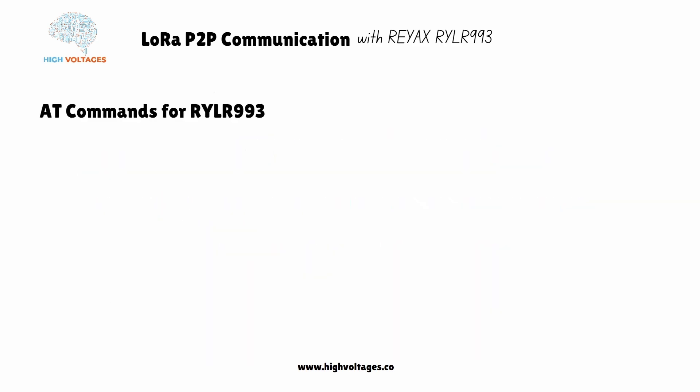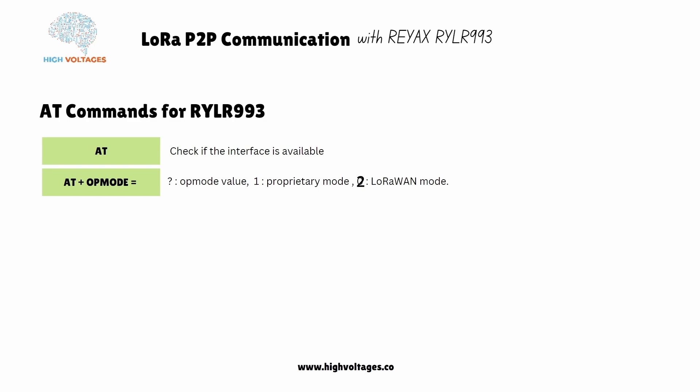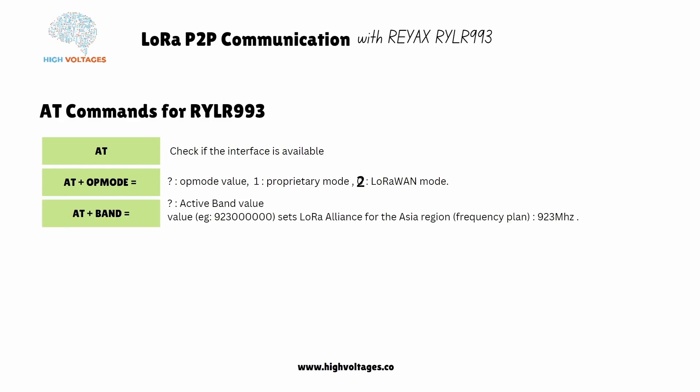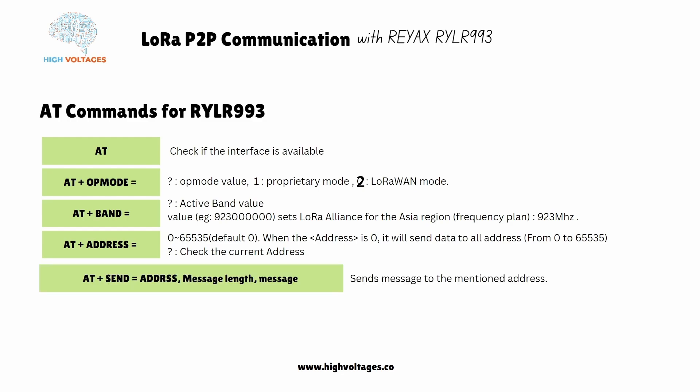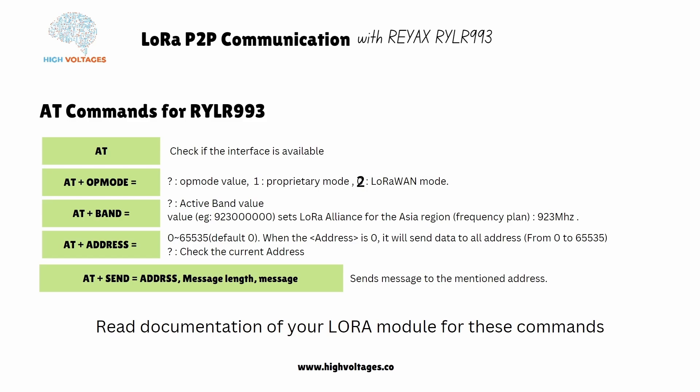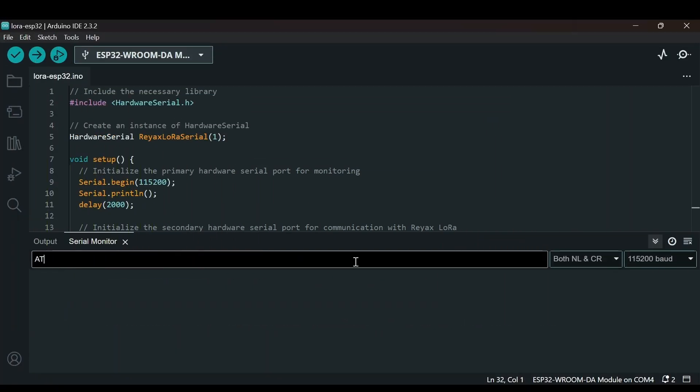Here are the AT commands we will use: 'AT' checks if the interface is available. 'AT+OPMODE' sets the operational mode — a value of 1 is proprietary mode, 2 is LoRaWAN mode. 'AT+BAND' sets the frequency based on region such as Asia, America, or Europe. 'AT+ADDRESS' sets or checks the device address. 'AT+SEND' requires the address, message length, and message to send. If you are using a different module, read its documentation for the specific commands.